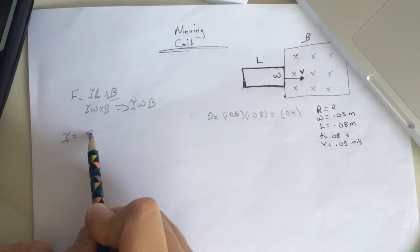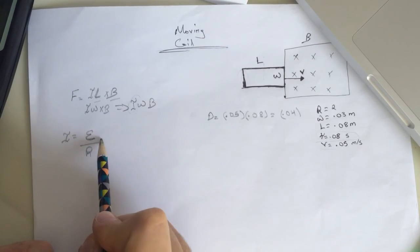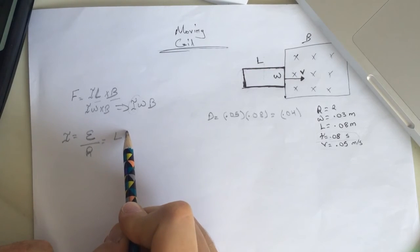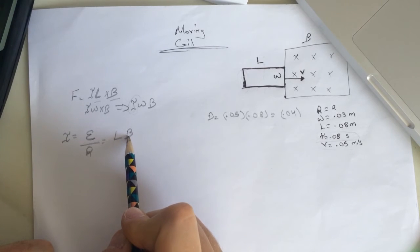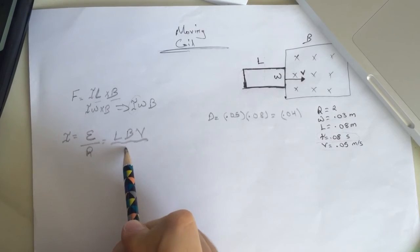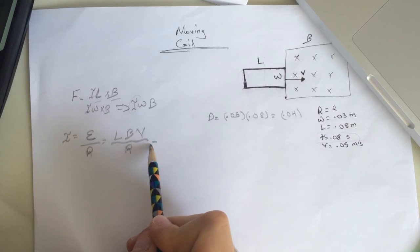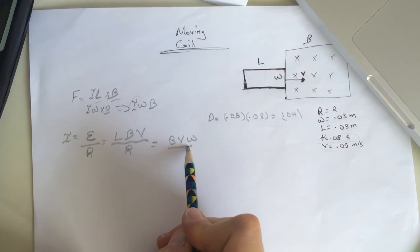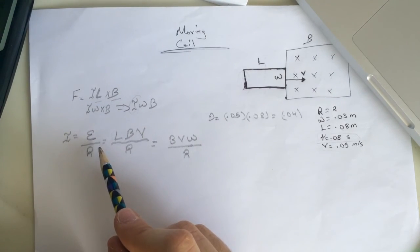The current I equals EMF over resistance R. The EMF is B times V times L, where L here is W. So changing the notation: I equals B times V times W over R.